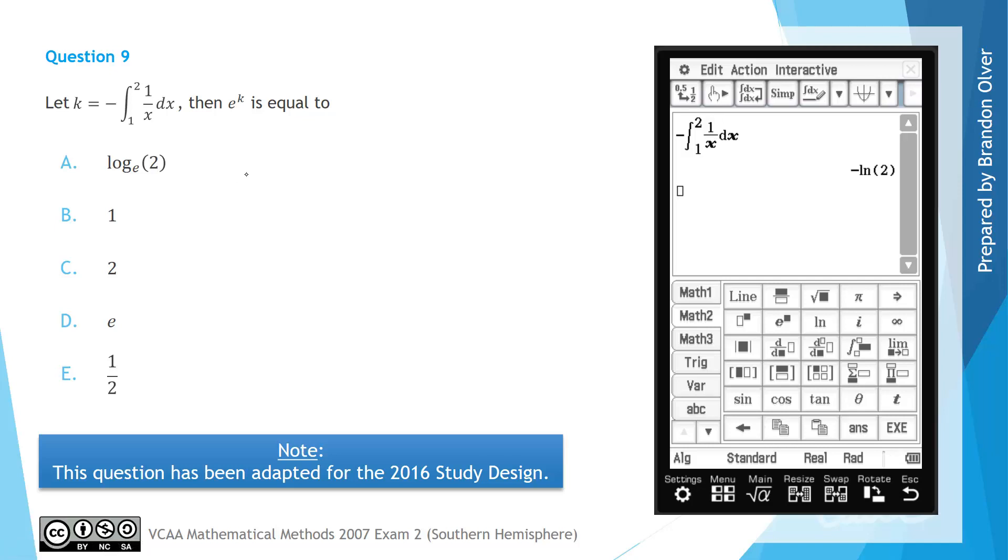That's our value of k. So from the calculator we found that k must then equal negative ln or log e of 2. So therefore when we want to evaluate e to the power of k, that's the same as calculating e to the power of negative ln of 2.